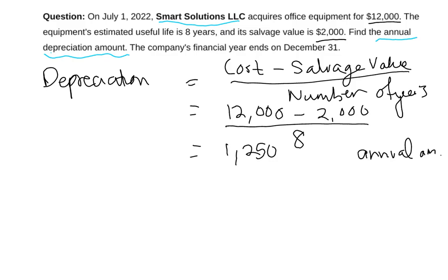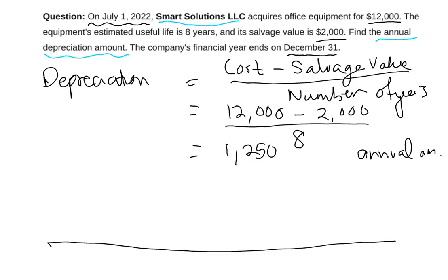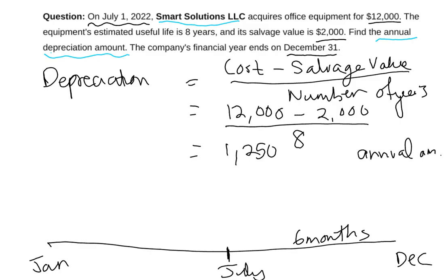However, please note that we acquired the equipment on July 1st and our financial year ends December 31st. A full financial period is 12 months — from January to December. We only got this equipment on July 1st, so counting from July: July, August, September, October, November, December — that is a total of six months. We should only account for depreciation from the date we actually started to own it.